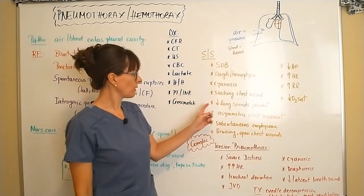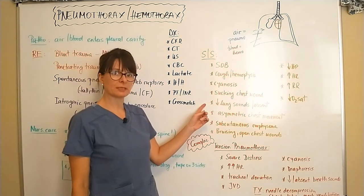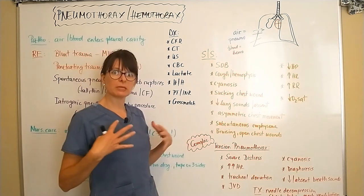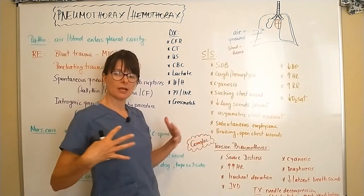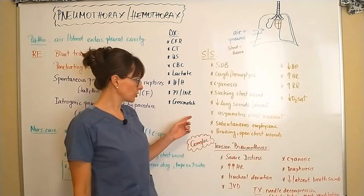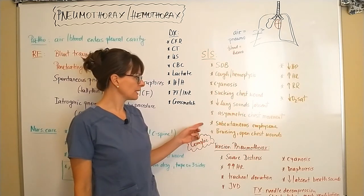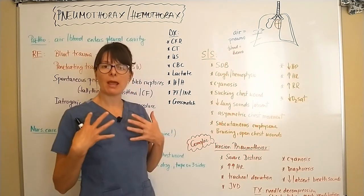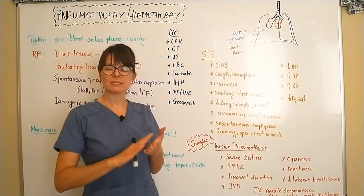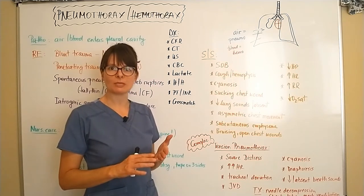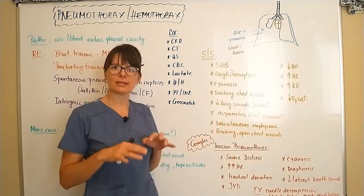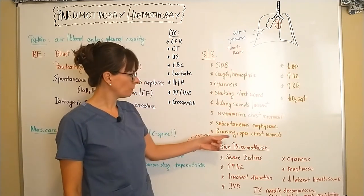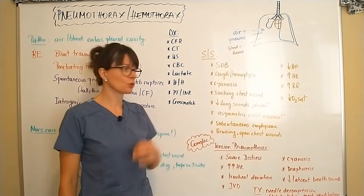On the affected side, we will have diminished or absent breath sounds and asymmetrical chest movement because the lung is no longer fully expanding. There may be subcutaneous emphysema — air underneath the skin that can be palpated and is often described as feeling and sounding like Rice Krispies. There may also be bruising or open chest wounds visible from the traumatic injury.